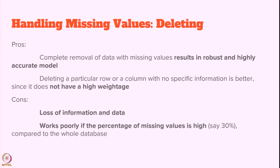Each method has its own merits and demerits. For deletion: the complete removal of data with missing values results in a robust and highly accurate model with no ambiguity or inconsistency. Deleting a row or column with no specific information is better since it does not have high weightage. The demerits are some loss of information, and it works poorly when the percentage of missing values is very high or when the dataset is too small.